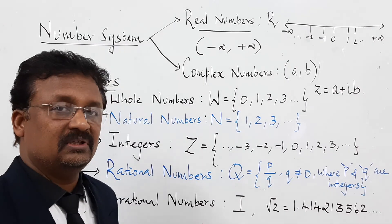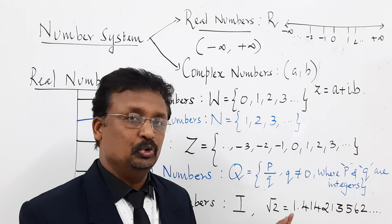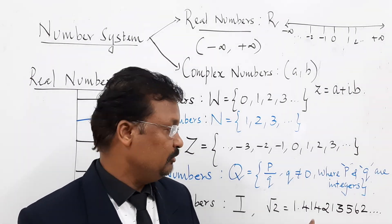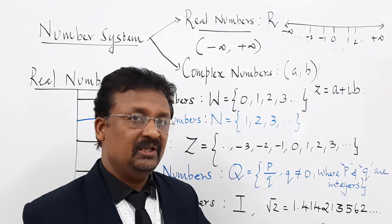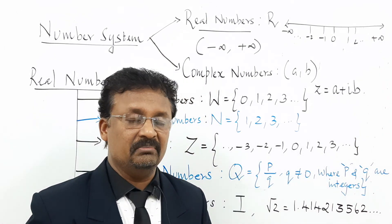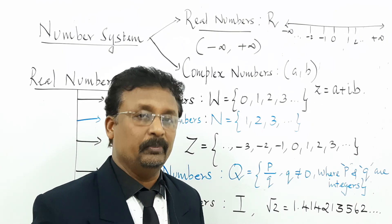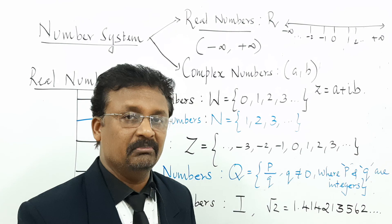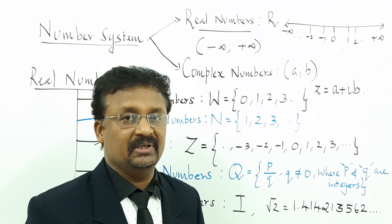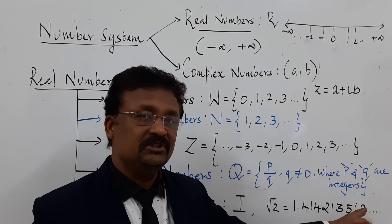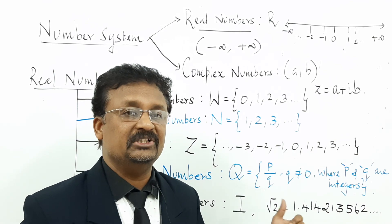The next subset is irrational numbers, represented by the letter I. For example, root 2 — its value by calculator is 1.414213562 and so on, which is non-repeating and non-terminating. That is the definition of an irrational number: non-repeating and non-terminating. Another example is root 3, which is 1.732. By contrast, 1 by 4 equals 0.25, which is terminated, so it is a rational number. Root 2, being 1.414213562, is irrational because it is non-repeating and non-terminating.